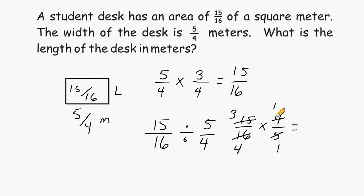So for the numerator, we have 3 times 1, which is 3. And for the denominator, we have 4 times 1, which is equal to 4. So that is the second strategy to solve this problem. We could say that the student desk has a length of 3 quarters of a meter.